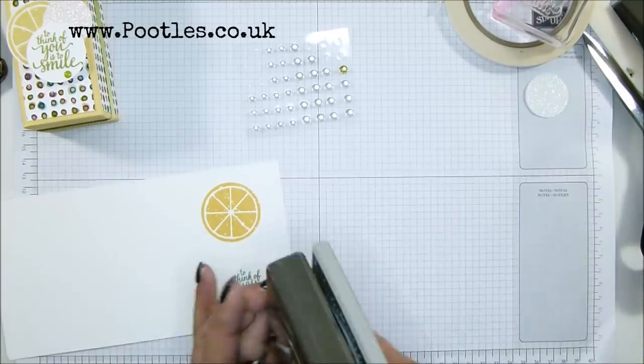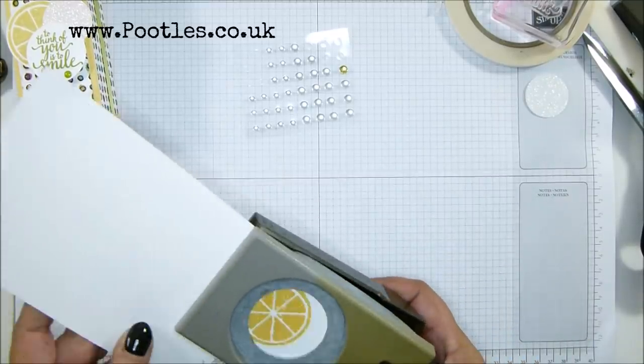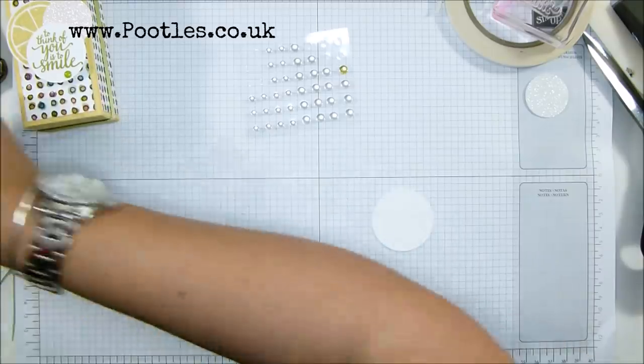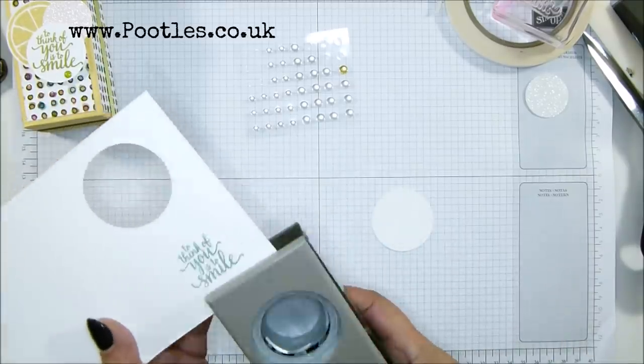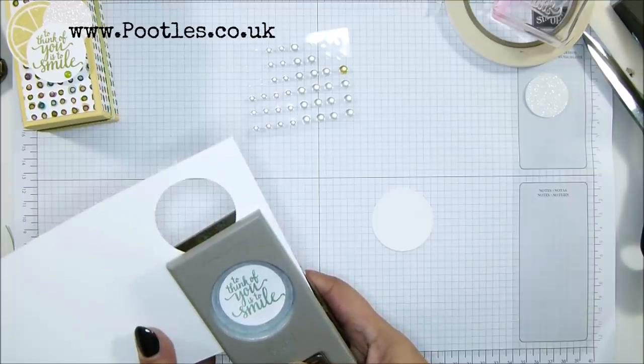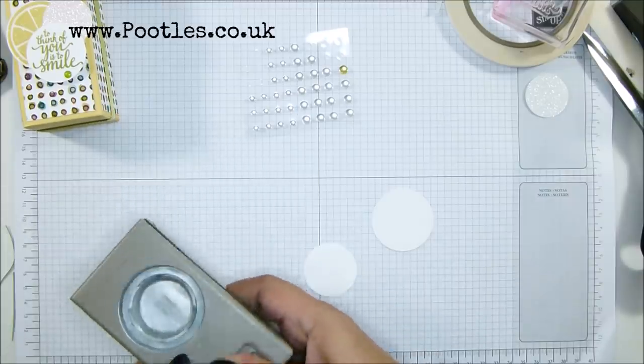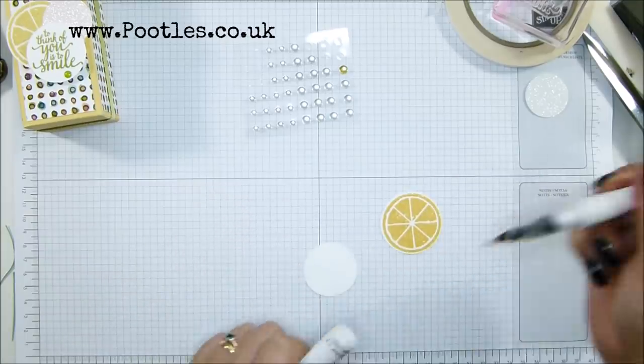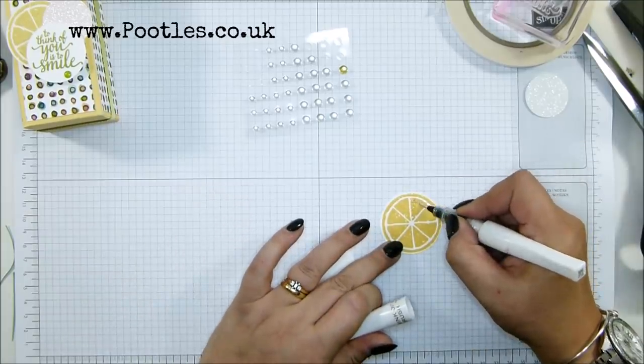So one and three quarter inch circle for my lemon. One and a half for my words. Whoa, drop everything. Wink of Stella on the lemon slices.